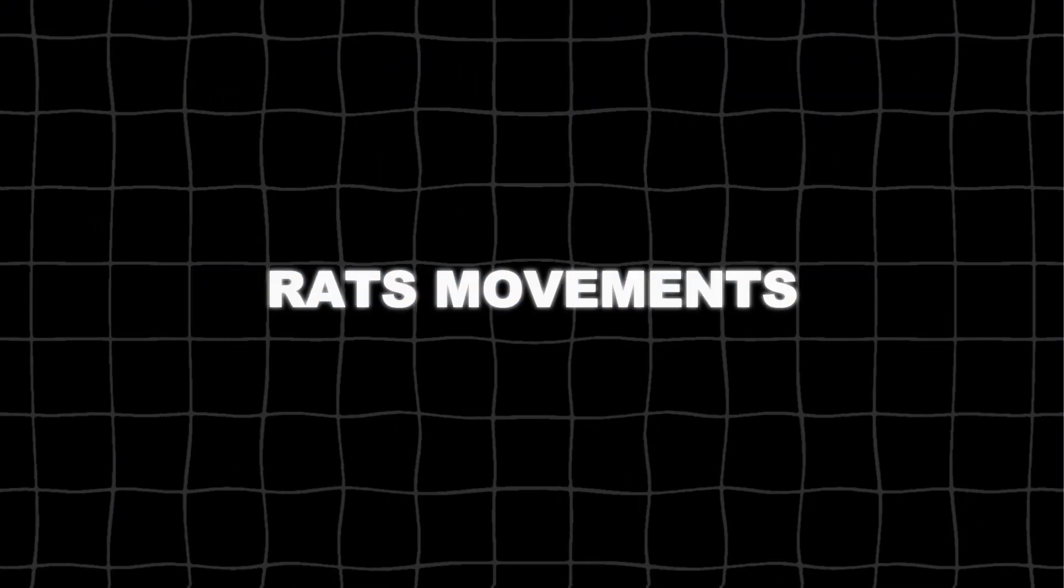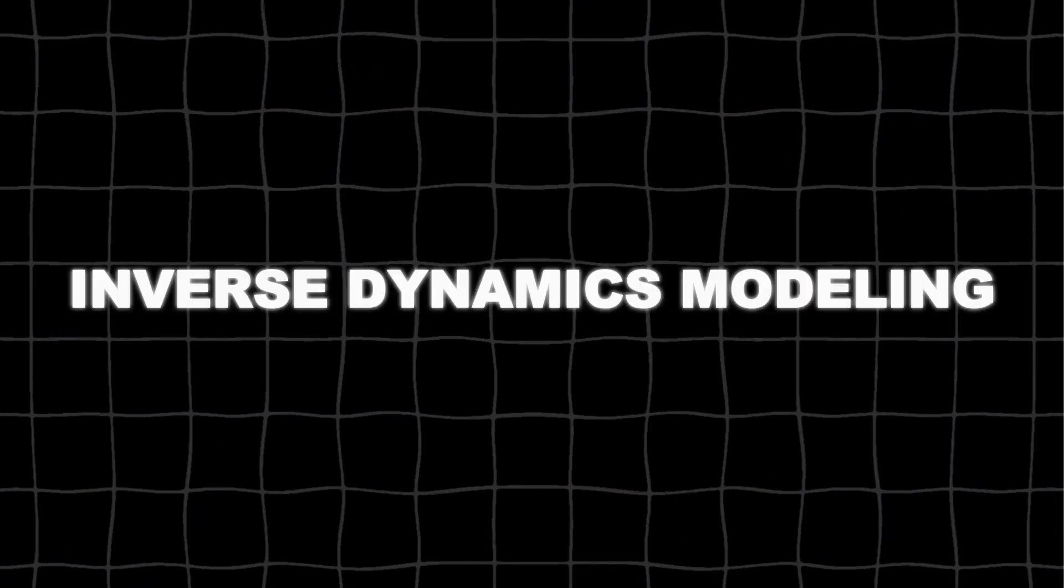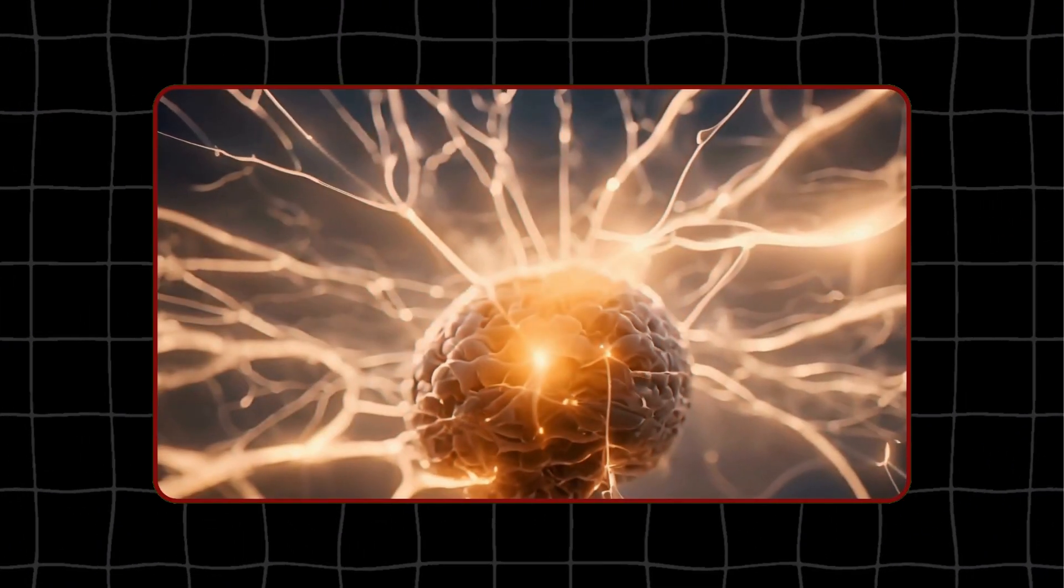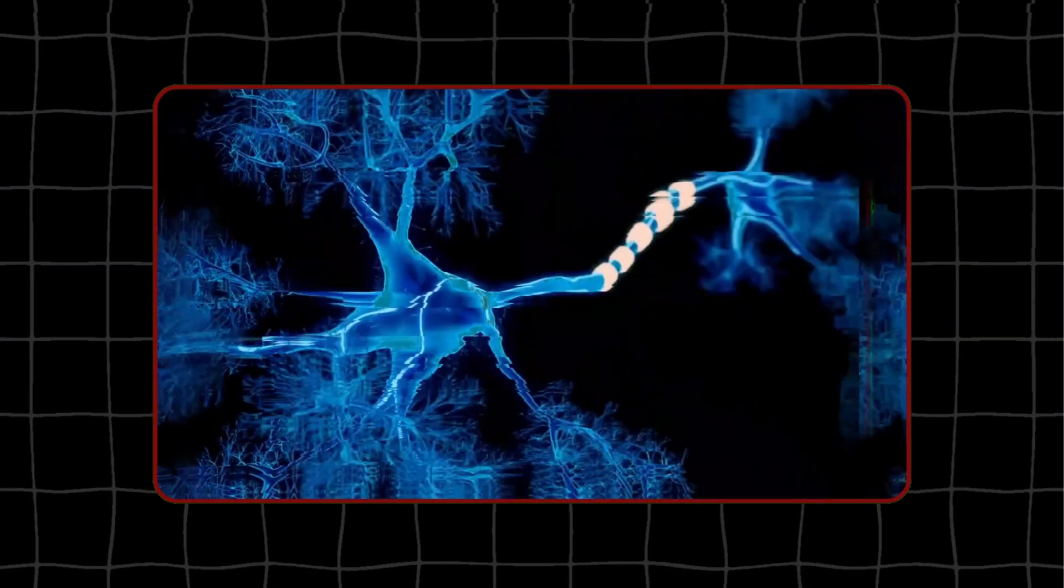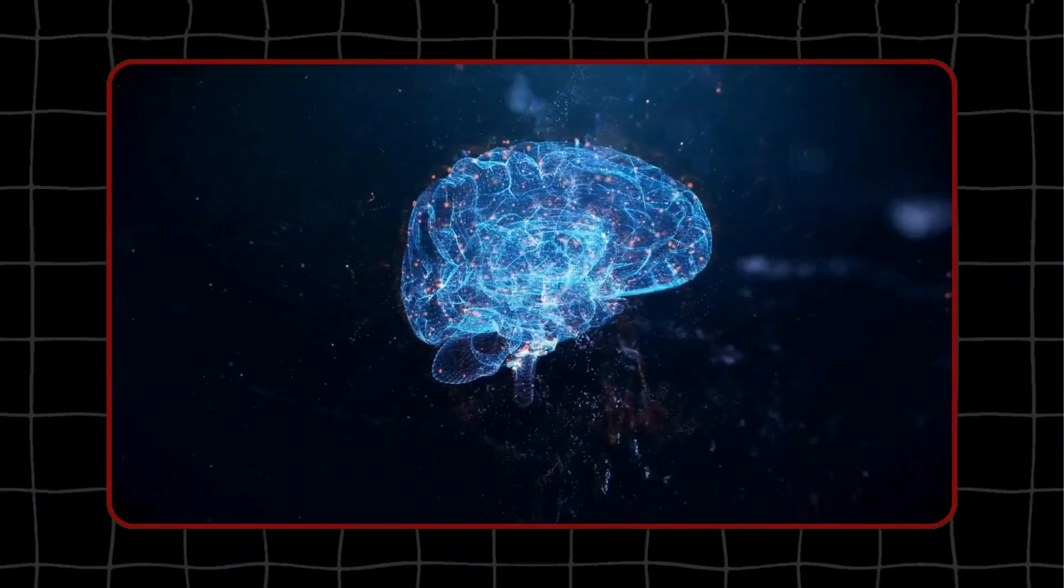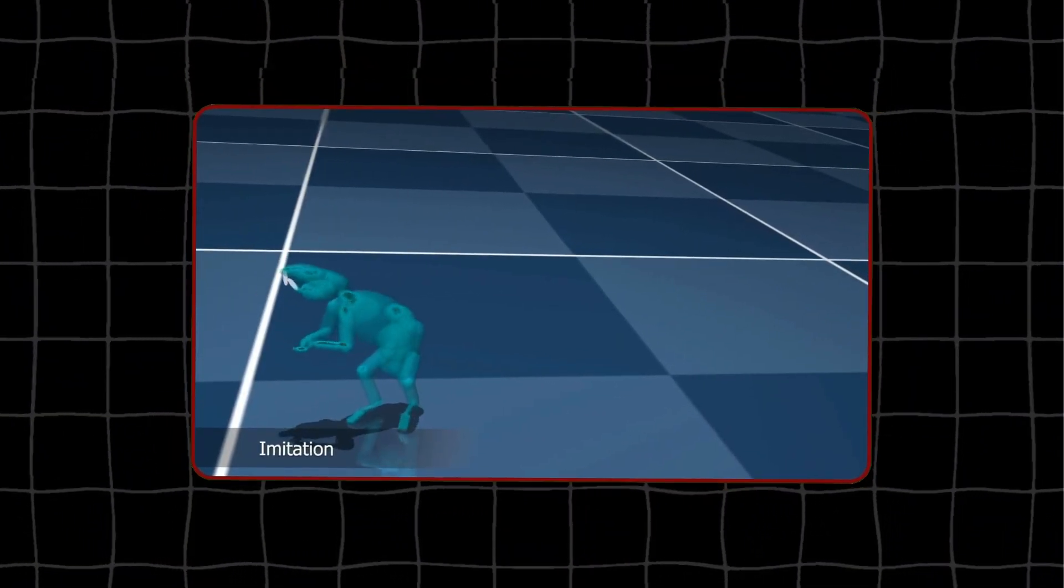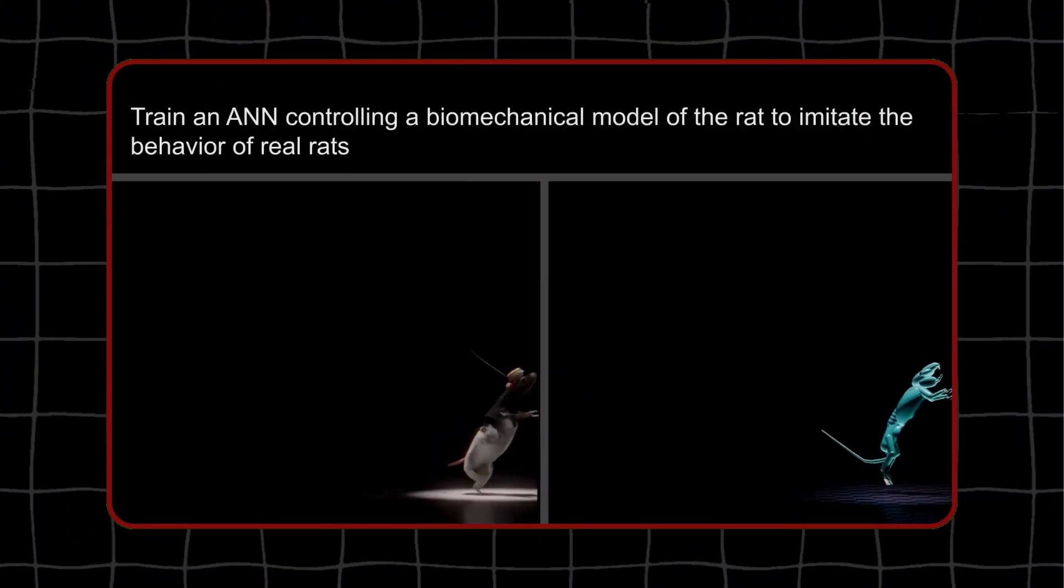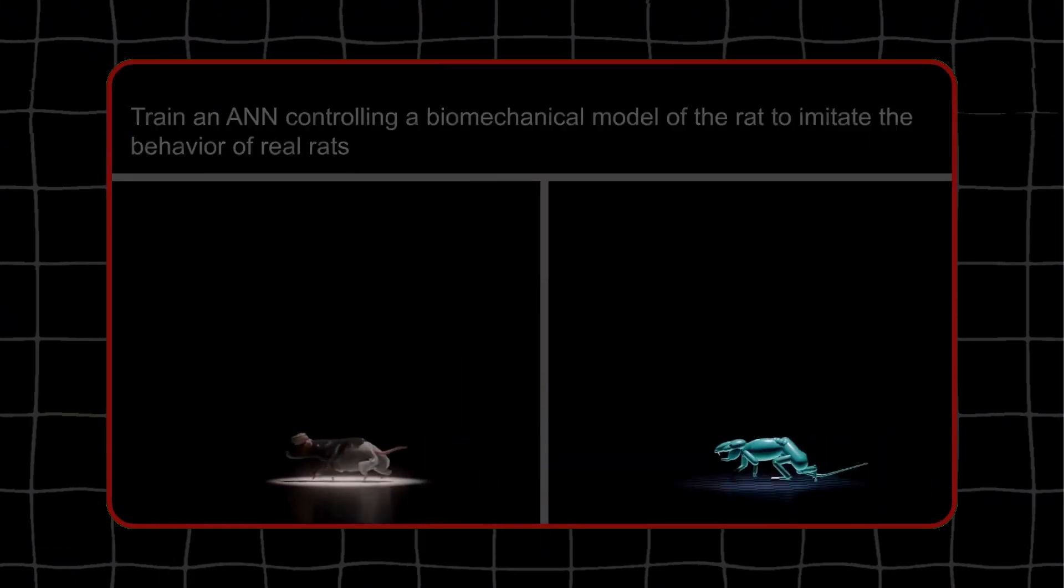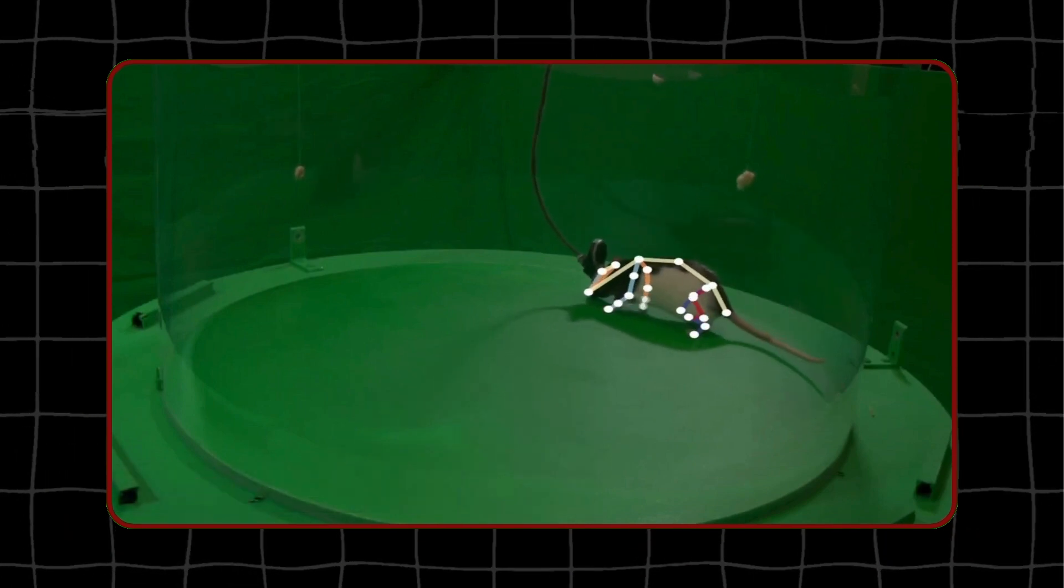To control the virtual rat's movements, the researchers used a method called inverse dynamics modeling. This method computes the necessary forces and torques needed at various joints to produce a desired motion. It's like figuring out what muscle actions are needed to move your arm to a specific position. In the context of the virtual rat, inverse dynamics modeling helped the artificial neural network learn how to produce precise movements by understanding the mechanics of the rat's body.